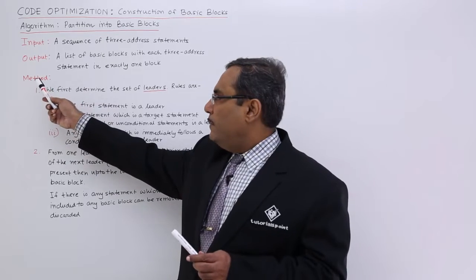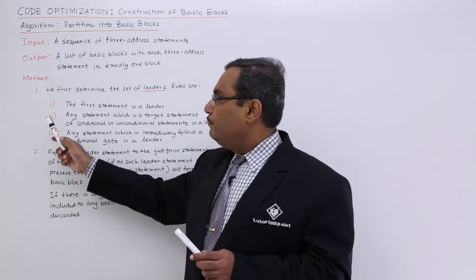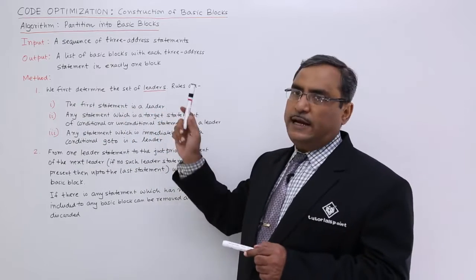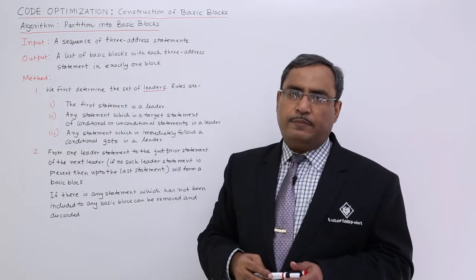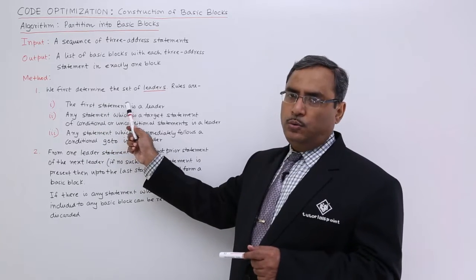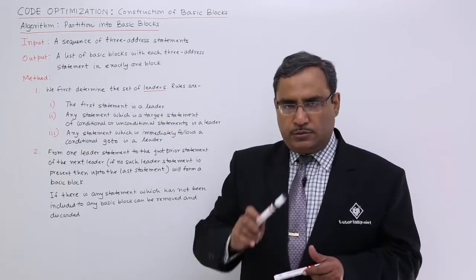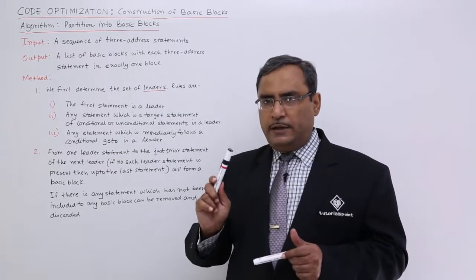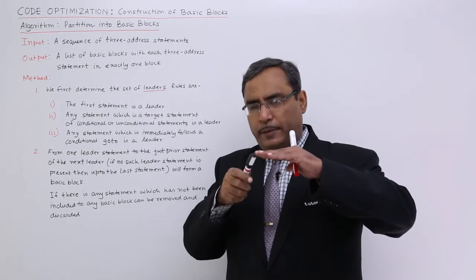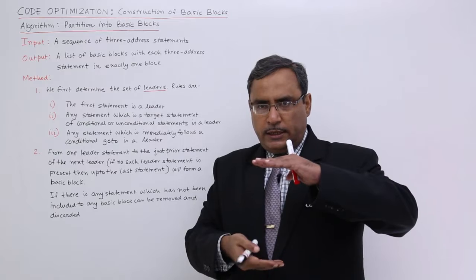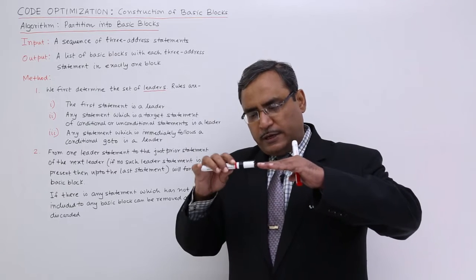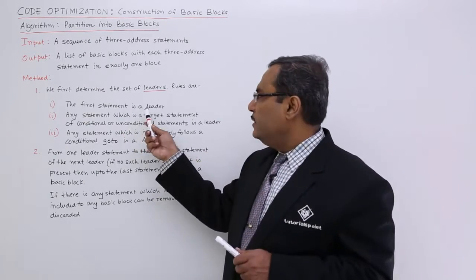There are two key methods. First, we determine the set of leader statements. The first statement of the three address code is always a leader statement. So, whatever code you have — say there are 20 such statements — out of these 20 statements, the first statement will be known as a leader.